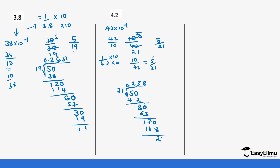The remainder value is still small, so we add a zero and continue with the process. It goes on and on until you get the final value. You can see we have the answer with some remainder values, and you can continue with the calculation.